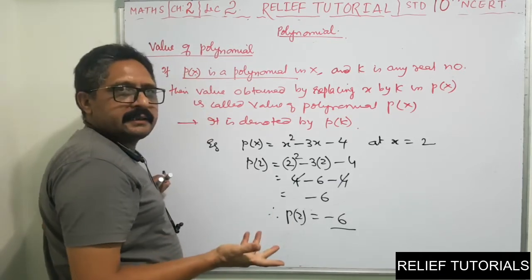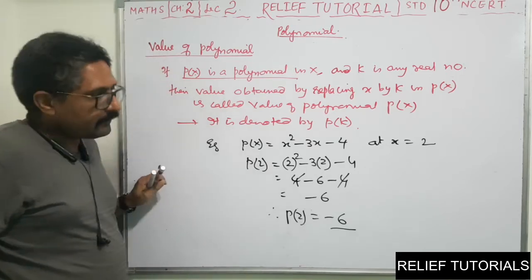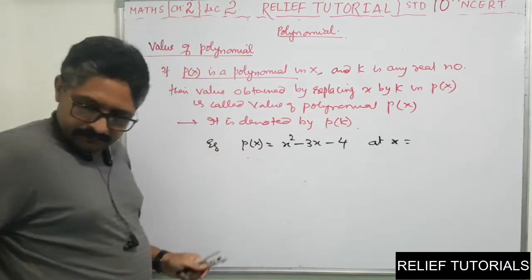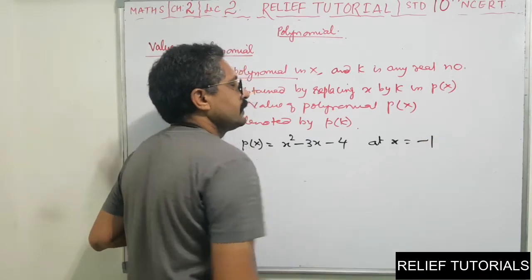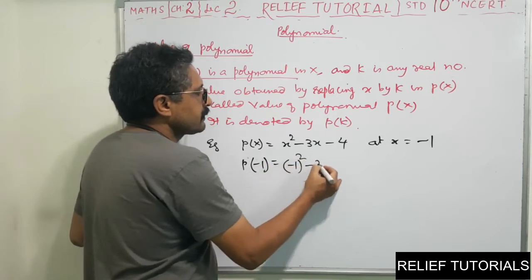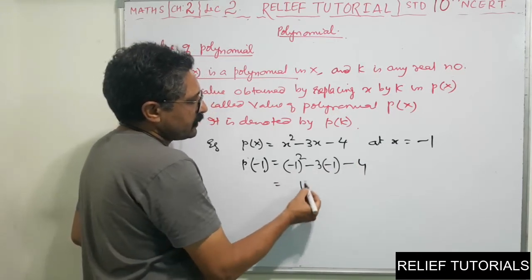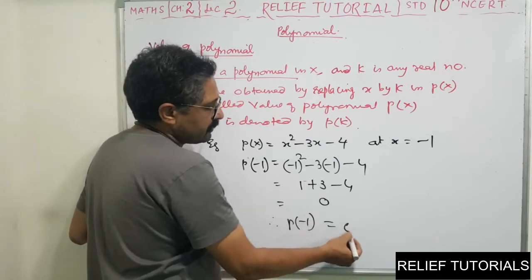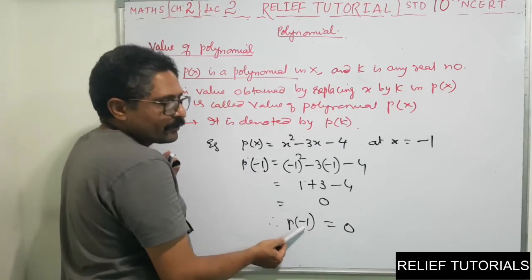Now we find the value at X equal to minus 1. P of minus 1 equals minus 1 squared minus 3 into minus 1 minus 4. That is 1 plus 3 minus 4, which equals 0. So P of minus 1 equals 0. Since the value is 0, minus 1 is called a zero of the polynomial.